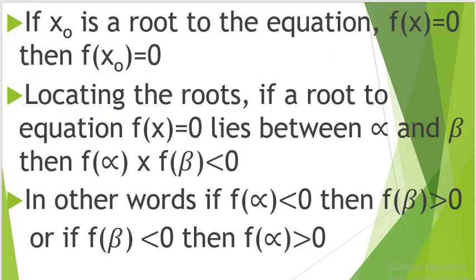If x naught is the root to the equation f(x) equal to 0, then f(x naught) is equal to 0. If x naught is the root to the equation, when you get the x naught value and substitute it in the function, the answer must be equal to 0.